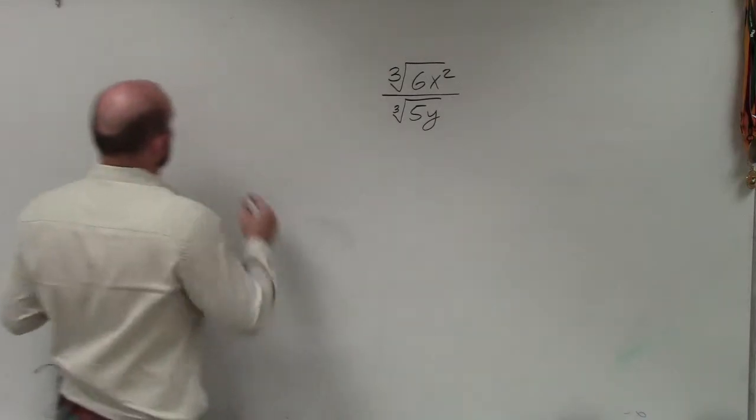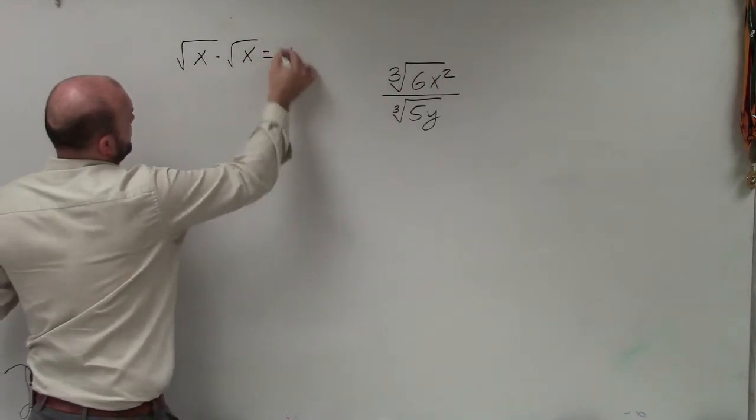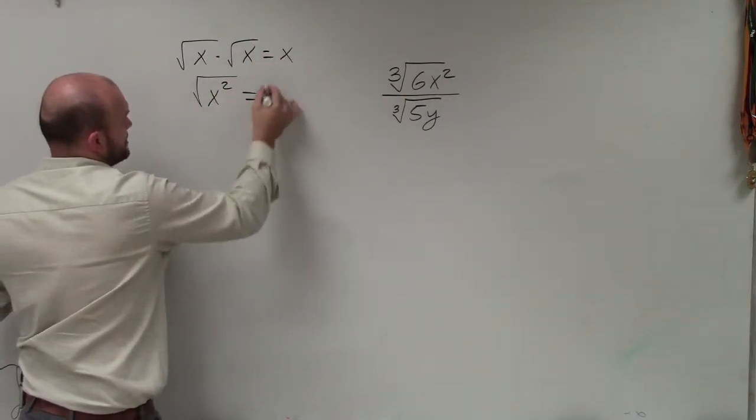Now, there's an important point that I want to make about this. We know that the square root of x times the square root of x is just going to equal x, because that becomes the square root of x squared, which equals x.